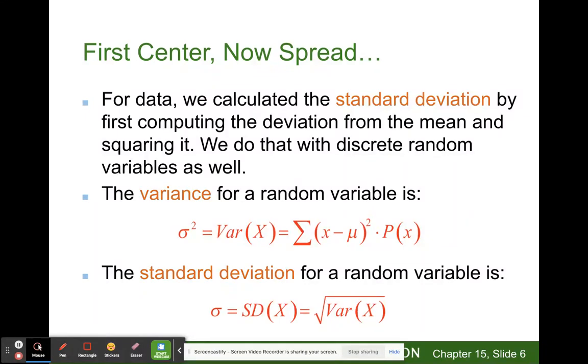For data we calculated the standard deviation by first computing the deviation from the mean and squaring it. We do that with discrete random variables as well. Variance, for example, is sigma squared.